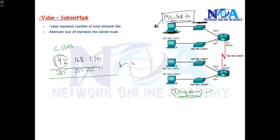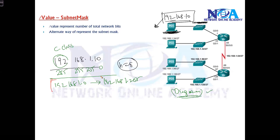That means there are eight host bits, which means the size of the network is 256. The range is going to be from 192.168.1.0 to 192.168.1.255. I'm going to assume all devices within this range belong to my network — but that's not necessarily true.